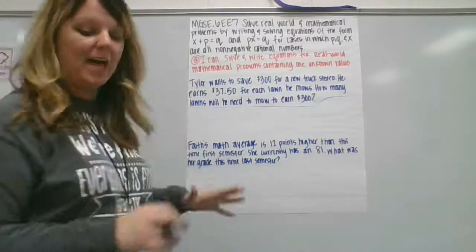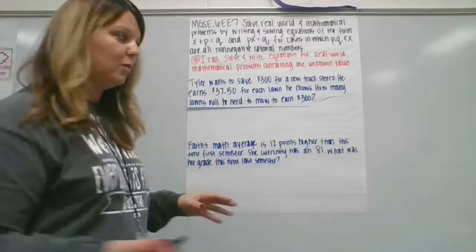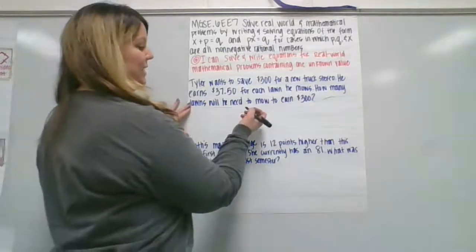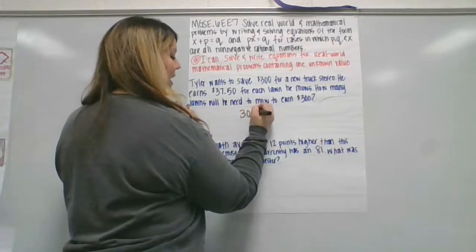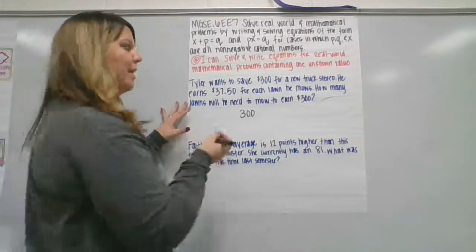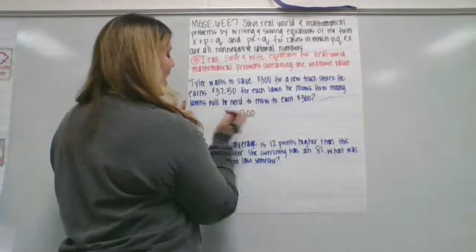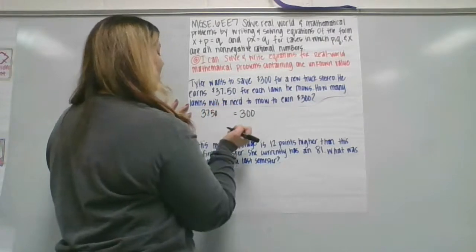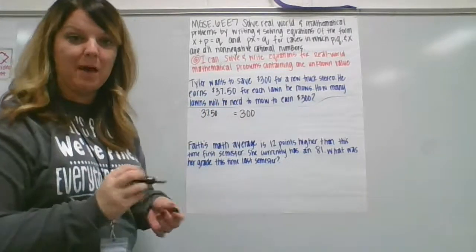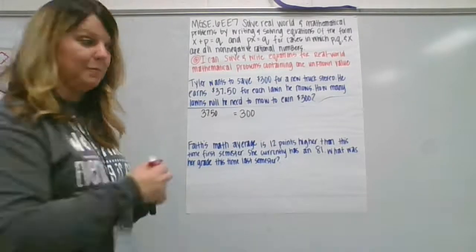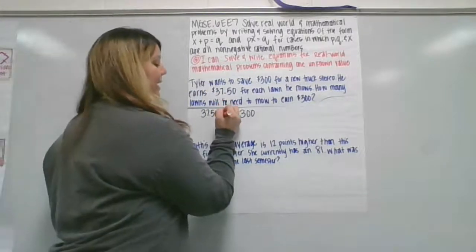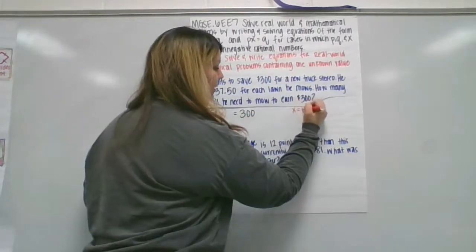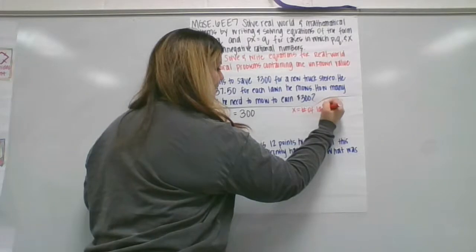So we're going to set this up with a variable, with an unknown quantity, because I don't know how many lawns he needs to mow. I do know the answer to our equation needs to be $300. I know that he makes $37.50 for each lawn that he mows. So the quantity of lawns that needs to be mowed is going to be our x value. So x equals number of lawns.